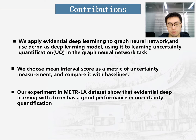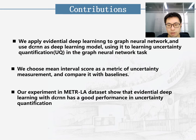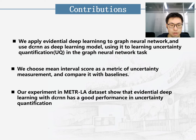Let me introduce the main contributions of the paper. First, we apply evidential deep learning to graph neural networks and use DCRNN as the deep learning model, using it to learn uncertainty quantification in graph neural network tasks. Second, we chose the Mean Interval Score as a metric of uncertainty measurement and compare it with other baselines. Third, our experiments on a real-world dataset show that evidential deep learning with DCRNN achieves good performance in uncertainty quantification.